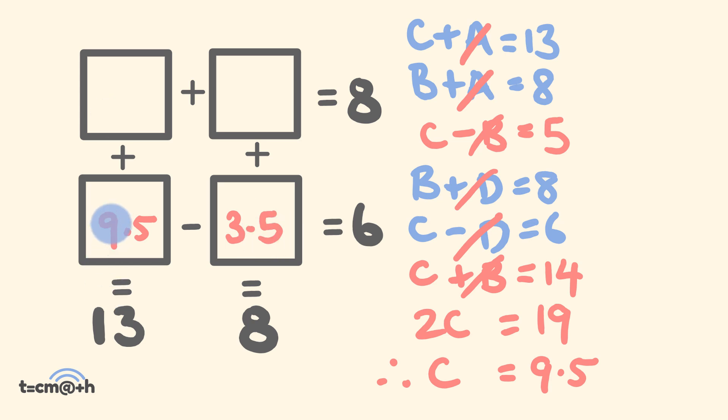The product of this number, 9.5 plus this unknown number, is 13. So therefore this number up the top here has to be 3.5. The product of 3.5 plus this unknown number is 8. Therefore this unknown number has to be 4.5. 4.5 and 3.5 do add up to equal 8. So we know that our answer is correct. And that's the answer.